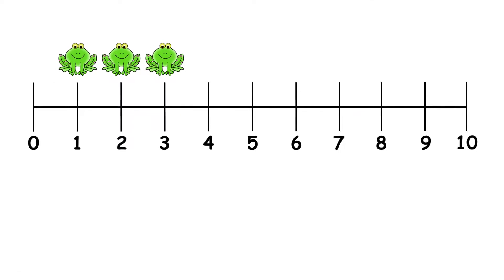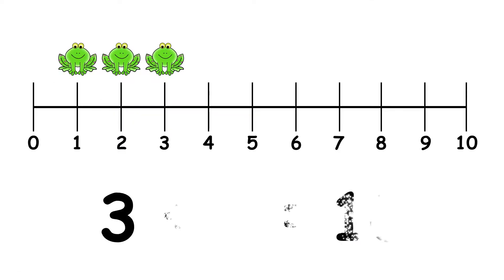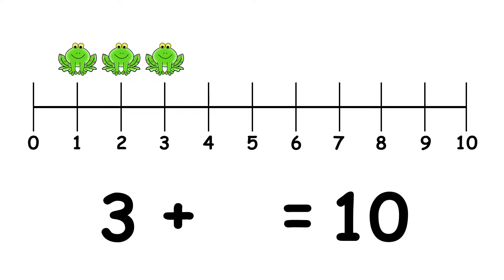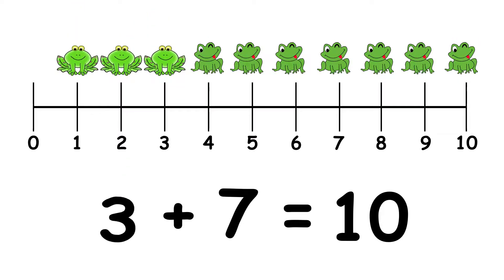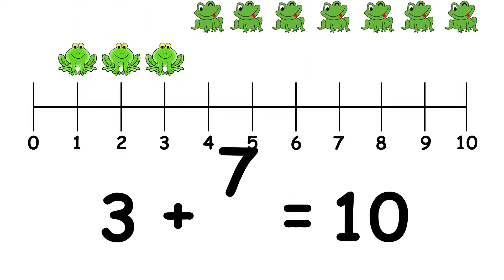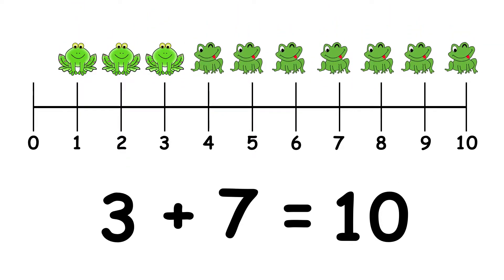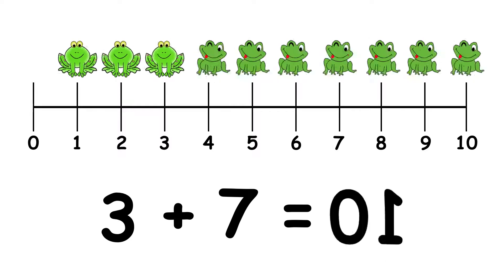We have 3 frogs. How many more do we need to make 10? 1, 2, 3, 4, 5, 6, 7. 3 and 7 make 10.